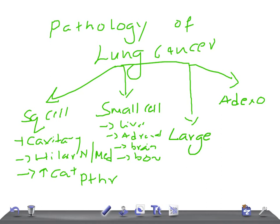Remember, the prognosis of small cell carcinoma does not improve with early diagnosis, making it a very dangerous cancer. Three important syndromes associated with it are: Eaton-Lambert syndrome, SIADH (syndrome of inappropriate ADH secretion), and SVC obstruction syndrome. If they mention signs and symptoms of these syndromes and ask for a cancer diagnosis, think small cell carcinoma.